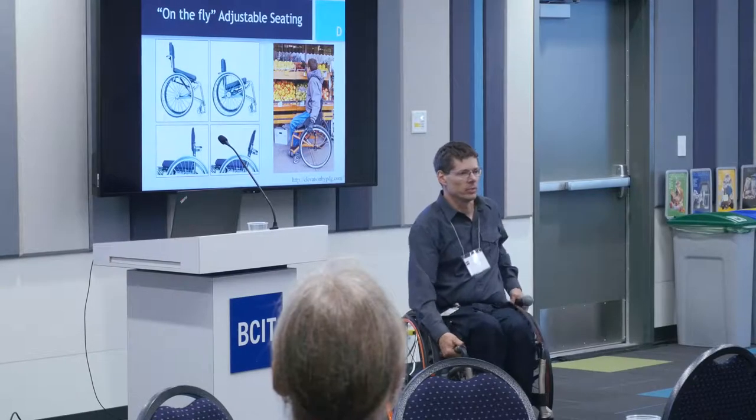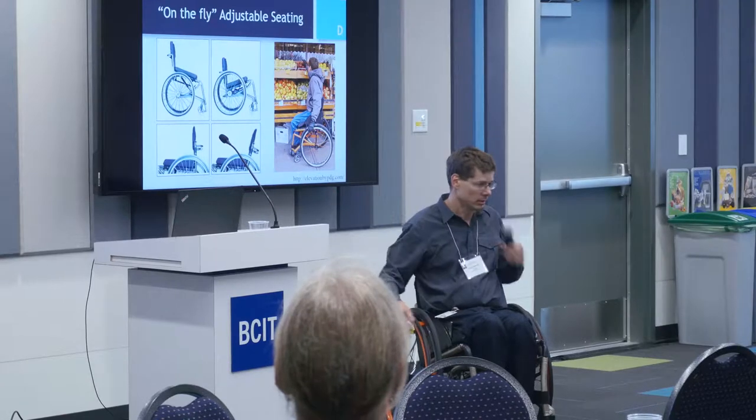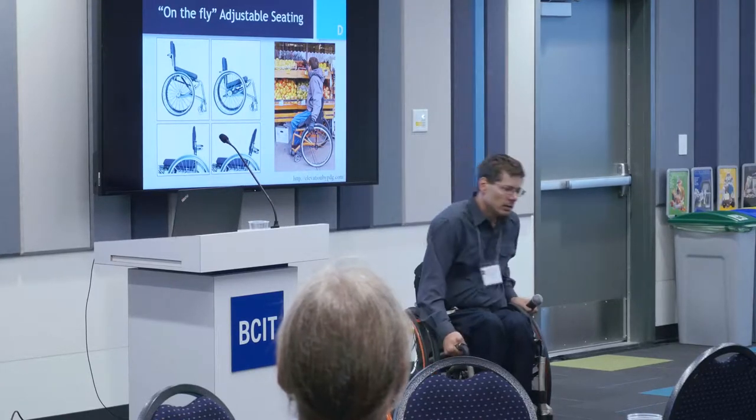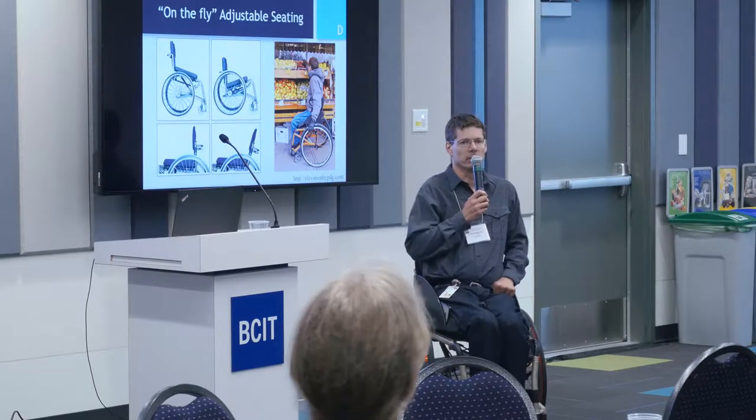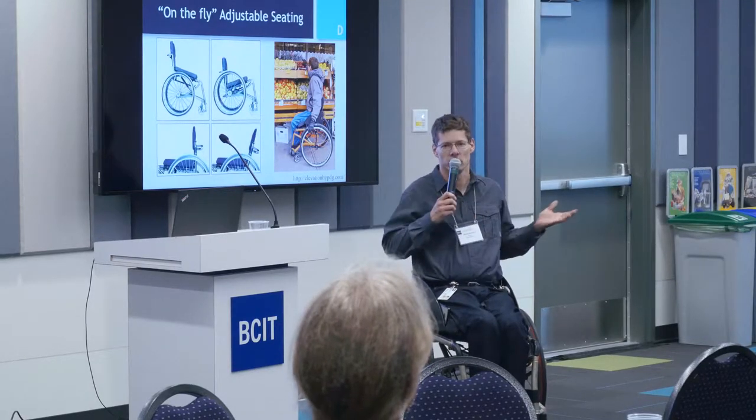Just before I came to BCIT, I developed this wheelchair that I'm sitting in here. It's called the elevation wheelchair, and it's been commercialized. It lets you change the seat position and the backrest position on the fly while you're sitting in it. I can change the seat really easily — get down nice and low for wheeling, or move it up higher or anywhere in between for other activities like talking to you or reaching a shelf.